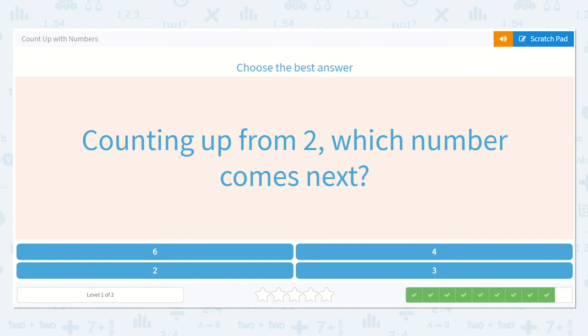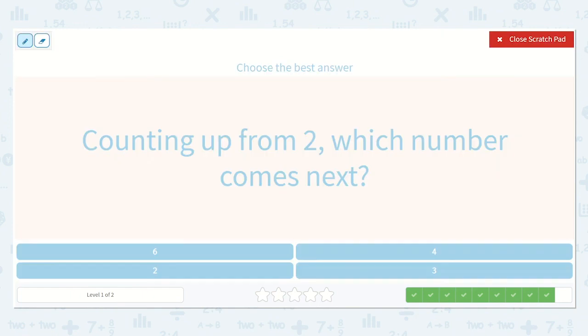Now, counting up from two, which number comes next? We could start with one. One, two, three. Three is our next number.